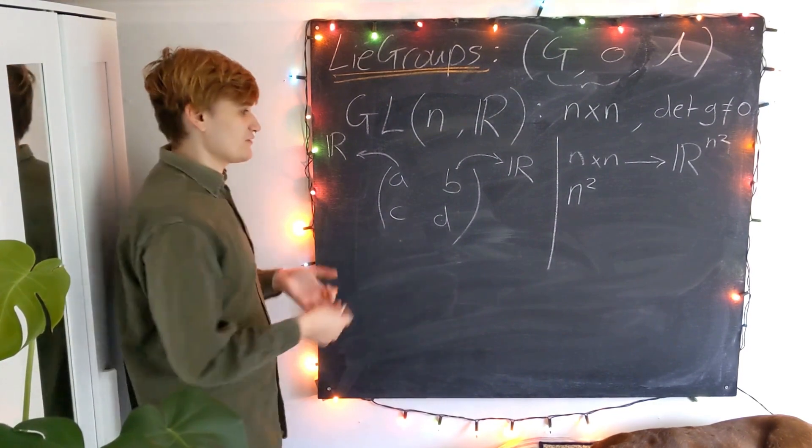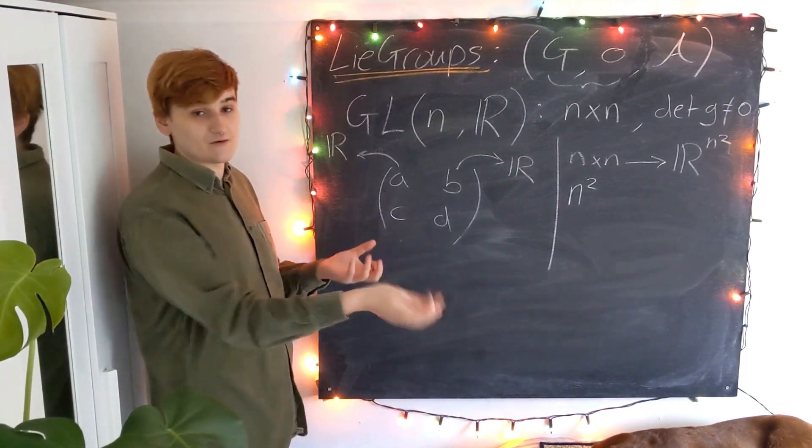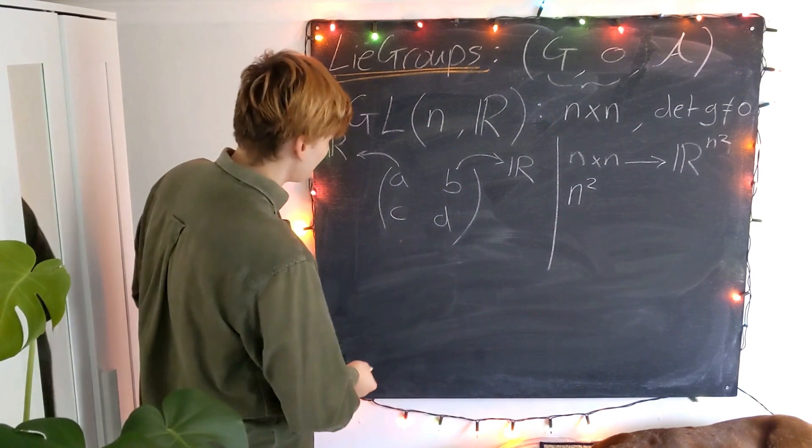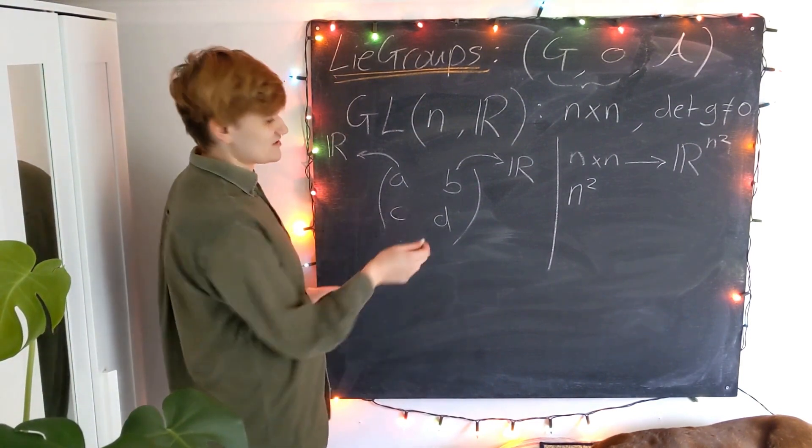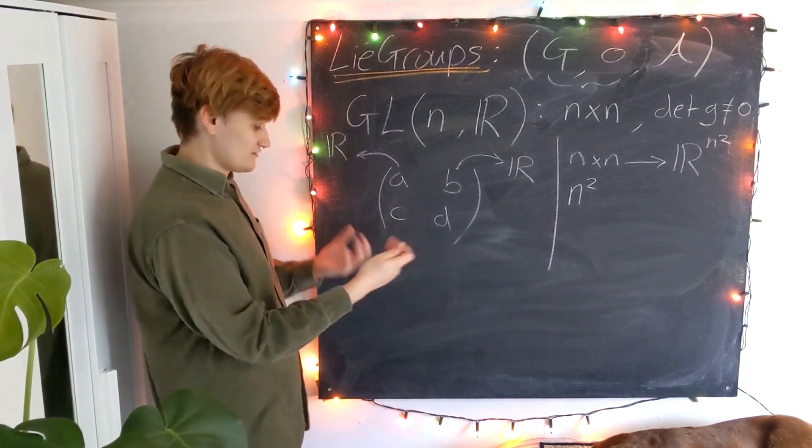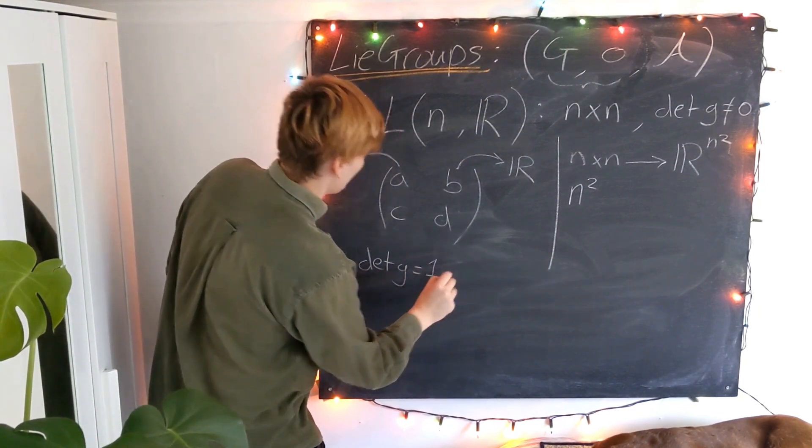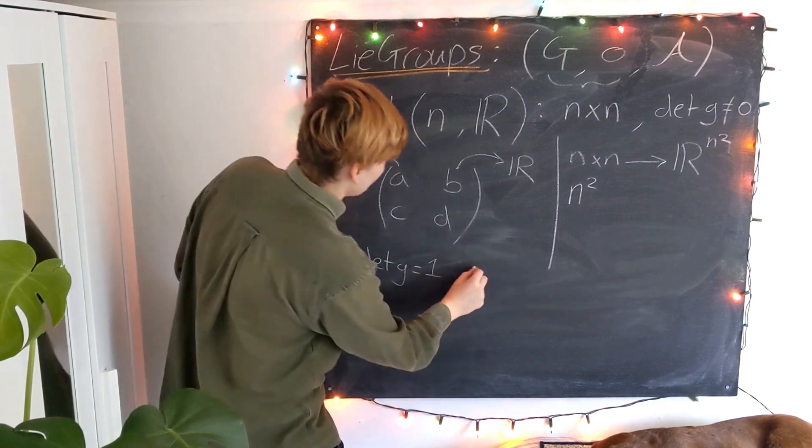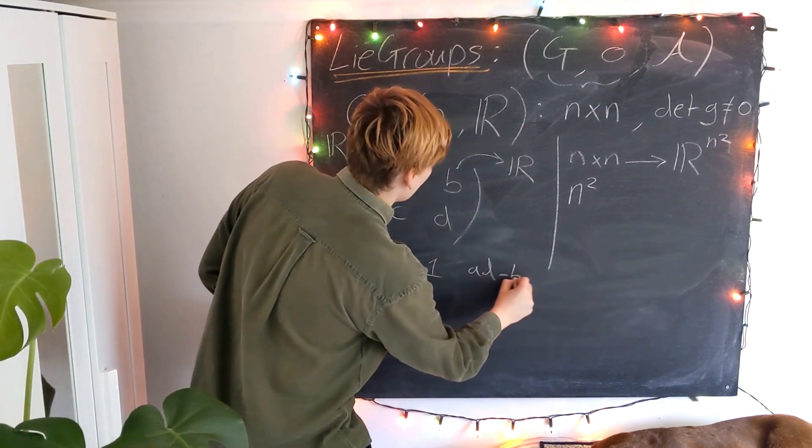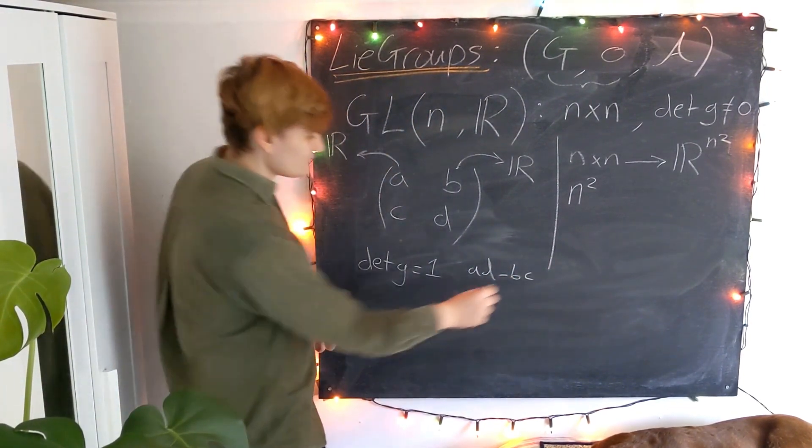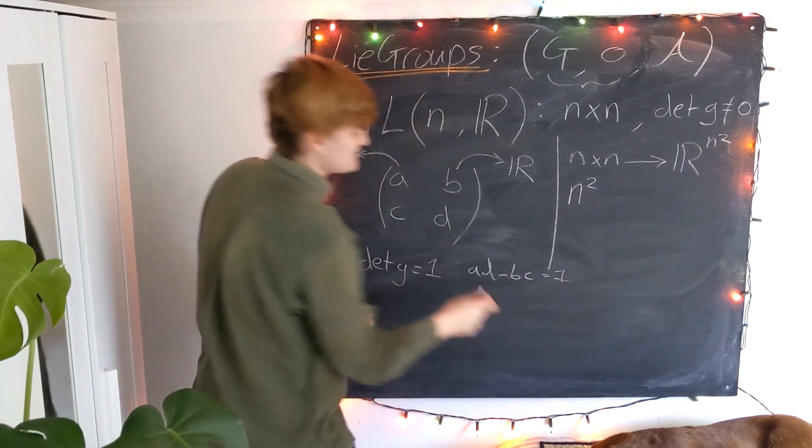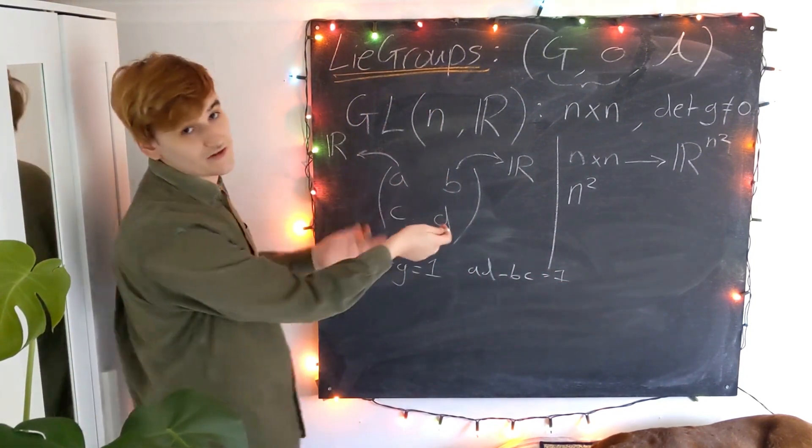So you might say, for example, impose that we want to have the determinant equal to one, for example. Then that would impose a condition on the matrix elements. We'll just quickly do that. If we say that DET G has to be equal to one, what's the determinant? Well, it's AD minus BC. If that has to be equal to one, this is effectively constraining our coordinates in some way.